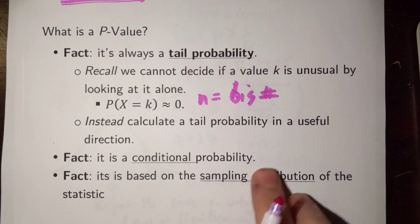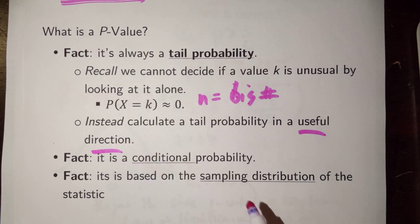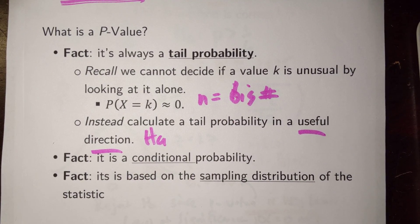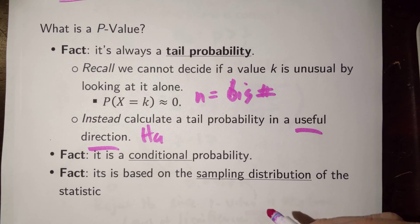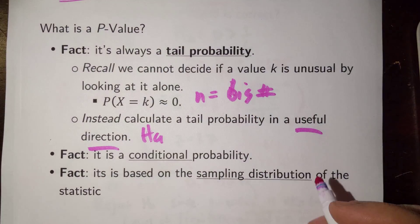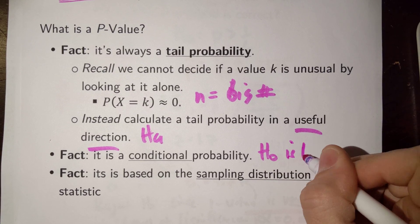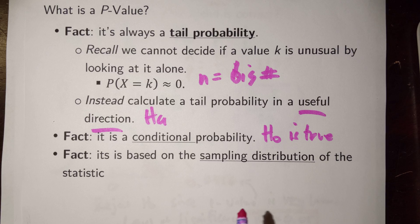So, we'll calculate a probability in a useful direction, and the useful direction we're going to talk about is whatever our alternative says. It's always going to be a conditional probability, and we're not necessarily certain that this is the probability given that sample statistic. It's just what the probability would be if the H-naught is true.